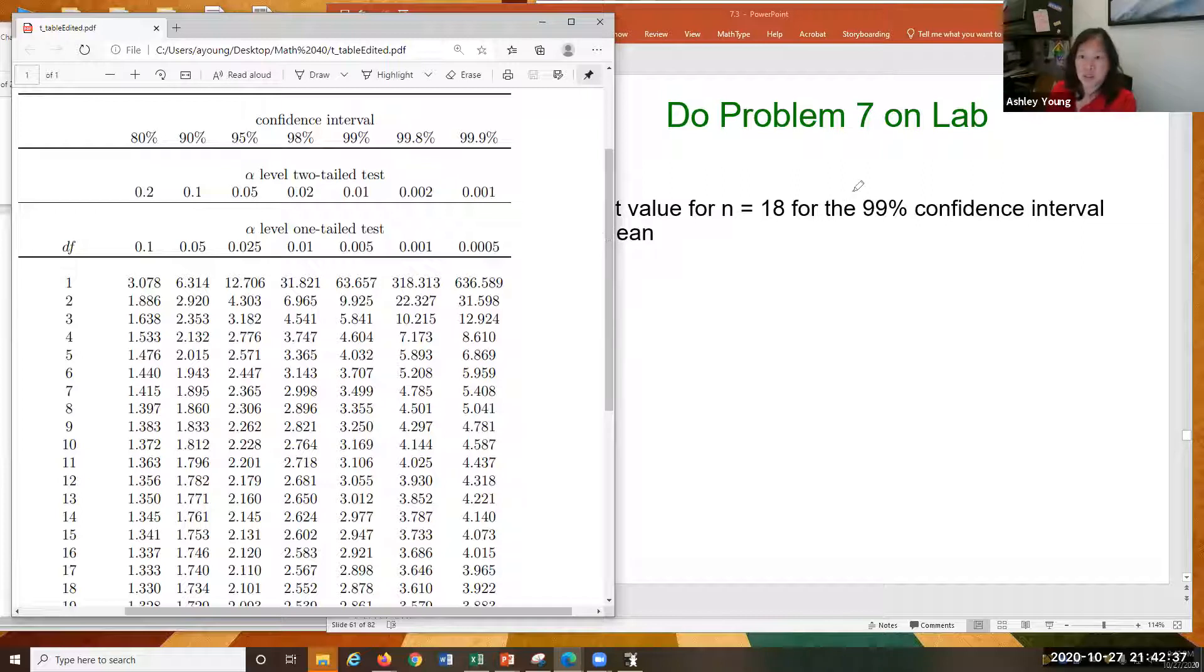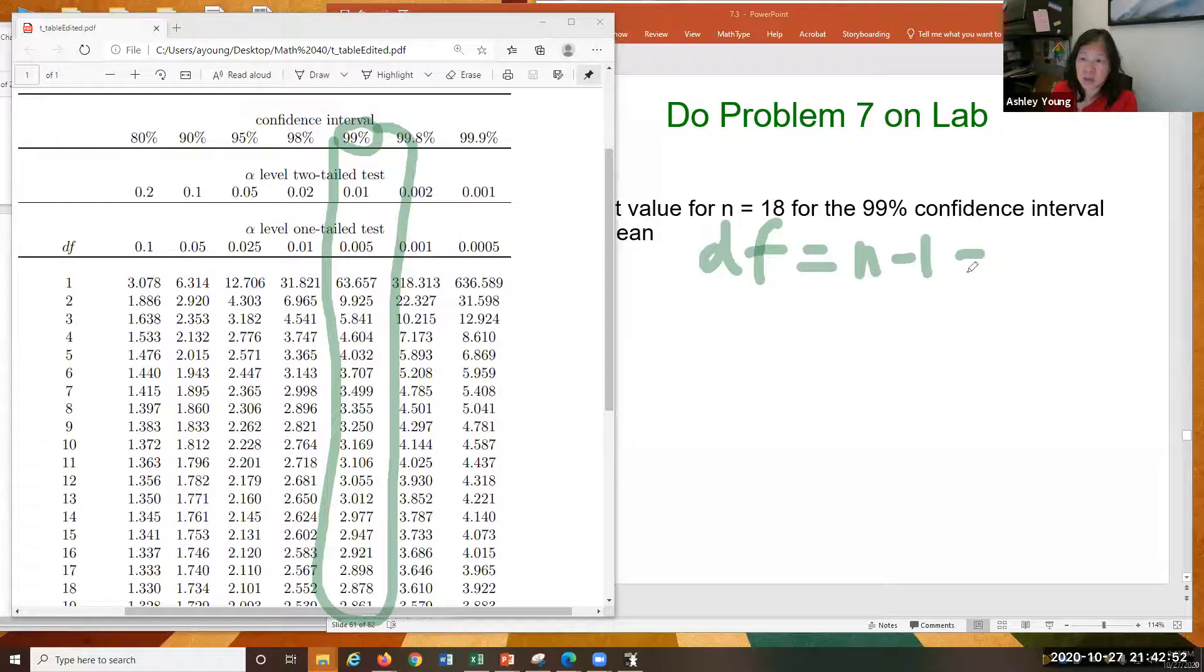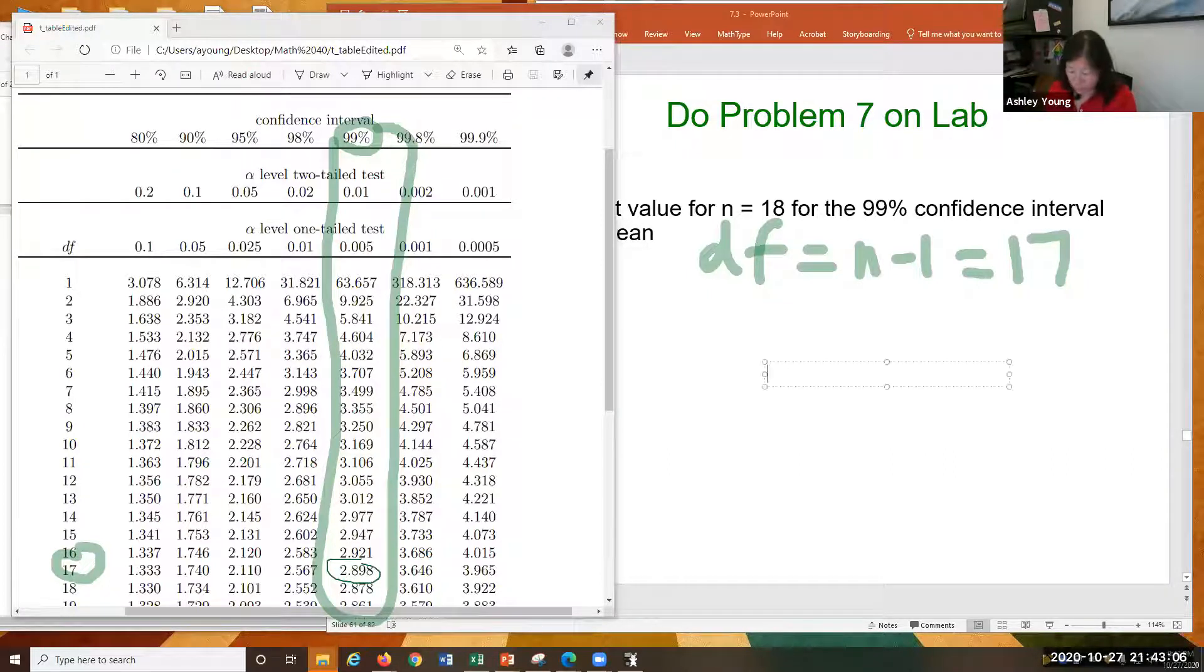Okay, good. All right, so 99% confidence interval. It's right here. That means we're going to be using this column here. And then my N is 18. That means degrees of freedom is equal to N minus 1, right? So that's 17. So N is 17. That's right there. We're going to grab this fellow right here.